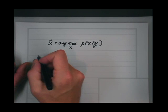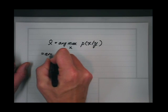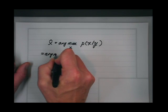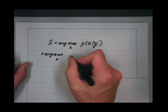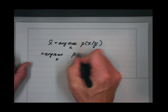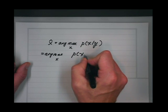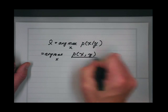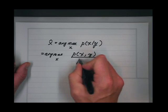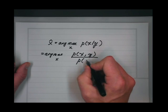So what you do is use Bayes' law. You say: the arg max over x of the joint probability of x and y over the probability of y.